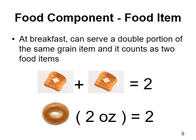Let's look at a grain example of a food component versus food item. You can plan to serve a double portion of the same grain item, and it may count as two food items. Here we have two pieces of toast, and they credit as two grains and two items. Similarly, a food component that contains a double portion counts as two items. A two-ounce bagel credits as two grains and therefore counts as two items in menu planning. It's easy to meet the four-item requirement at breakfast in order to implement Offer vs. Serve.